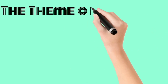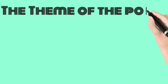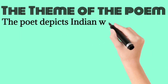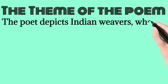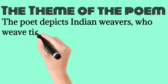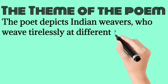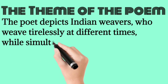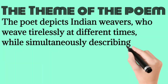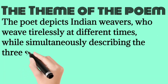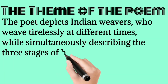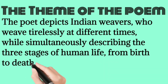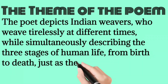The theme of the poem: The poet depicts Indian weavers who weave tirelessly at different times, while simultaneously describing the three stages of human life from birth to death, just as the weavers weave from dawn to night.